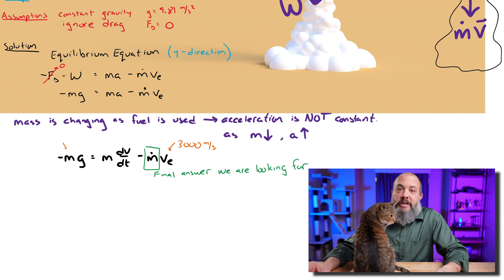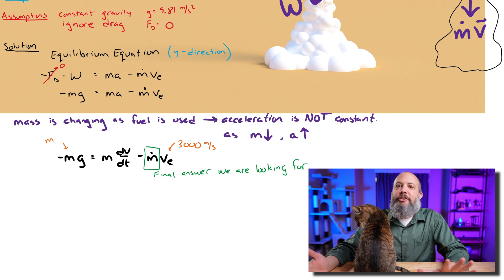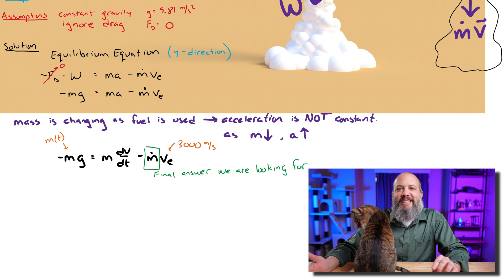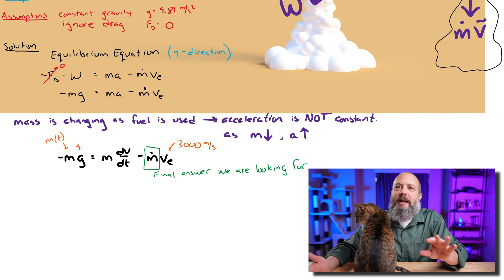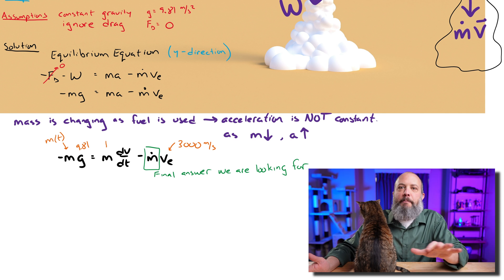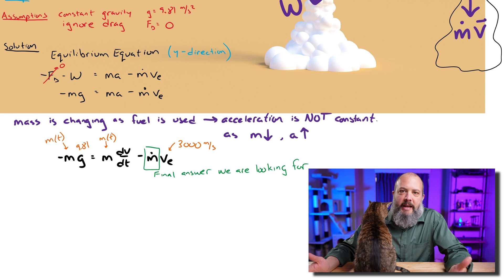Gravity is a constant 9.81. And m is actually a term that's changing. So I'm going to put here this is m(t), like m as a function of time. This is not mass times time, it's not multiplication, it's mass as a function of time.